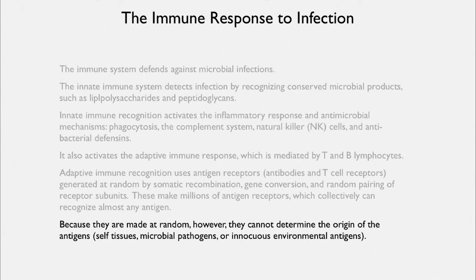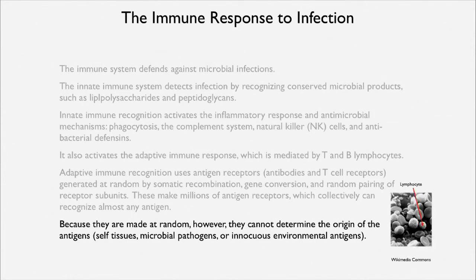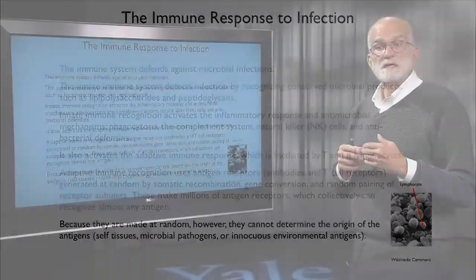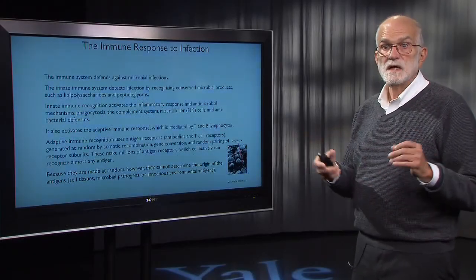Because they're made at random, these receptors cannot determine the origin of antigens by themselves — they don't know whether they're dealing with self, with a microbial pathogen, or with some innocuous environmental antigen. This is part of the lymphocyte response — the adaptive immune response relies on cell-to-cell communication between different kinds of cells: T cells, B cells, dendritic cells, and others. And because it's a cellular response, and cells take time to divide and build up a population, it takes time.